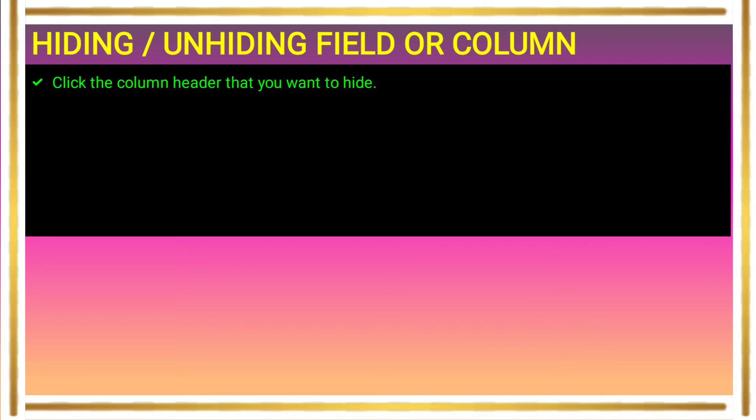A field or column can be hidden to make it visible or invisible. To hide a field or column, click the column header that you want to hide — making it invisible.